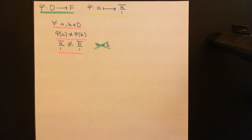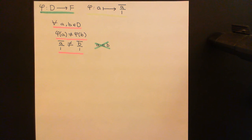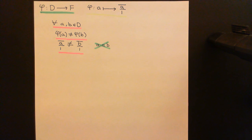Now what we want to prove is that φ obeys the criteria of a ring homomorphism. So we want to prove additive compatibility, multiplicative compatibility, and that the multiplicative identity in the integral domain is mapped onto the multiplicative identity in the fraction field.